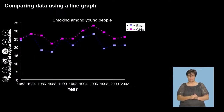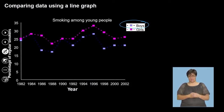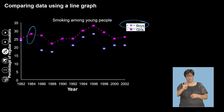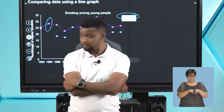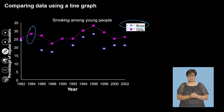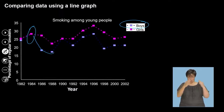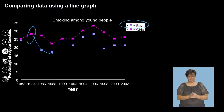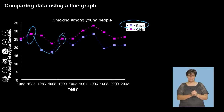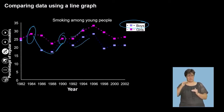On the line graph, blue represents boys and pink represents girls. In 1984, the percentage of boys and girls smoking was equal — the lines meet. From there, the number of boys smoking decreases at a higher rate, while girls also decreased but only slightly. The lines meet again at certain points where percentages are equal, and both trends show increases and decreases over time.